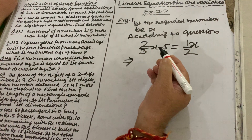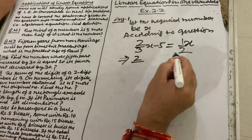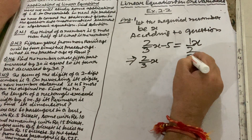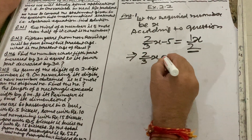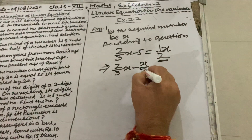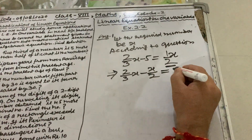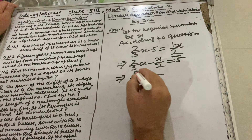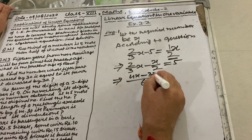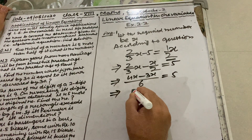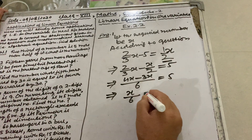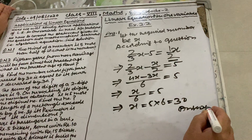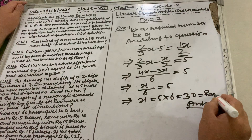Now we will solve this problem and find out the value of x. On transposing the variable terms, we bring x/2 to the left-hand side with a sign change: 2/3 x minus x/2 equals 5. Taking LCM as 6: (4x minus 3x)/6 equals 5, which gives x/6 equals 5, so x equals 30. This is the required number.